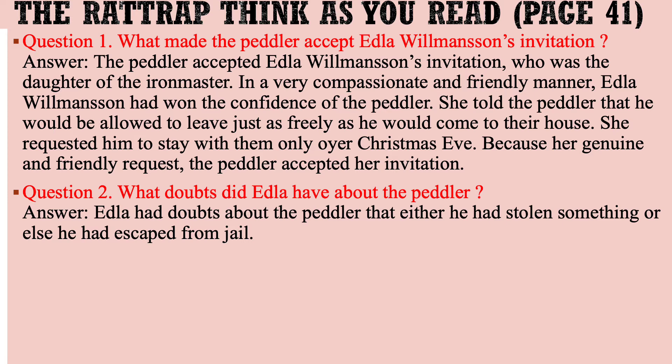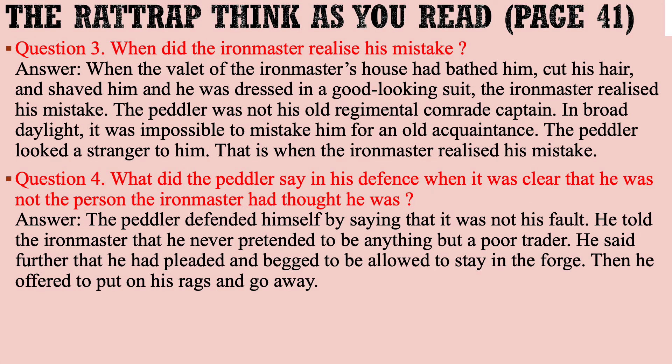Question number two: What doubts did Edla have about the peddler? Answer: Edla had doubts that either he had stolen something or had escaped from jail. Question number three: When did the Iron Master realize his mistake? Answer: When the valet had bathed him, cut his hair, shaved him, and placed him in a good-looking suit, the Iron Master realized his mistake. The peddler was not his old regimental comrade Captain. In broad daylight it was impossible to mistake him for an old acquaintance — the peddler looked a stranger to him.